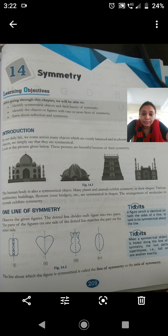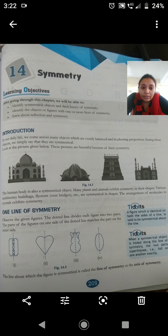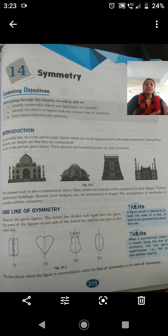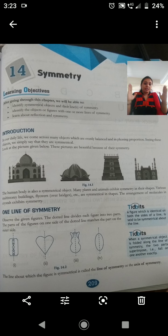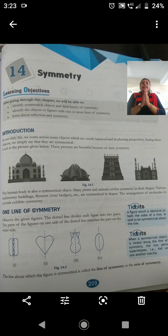See the introduction over here. In our daily life, we come across many objects which are evenly balanced and in pleasing proportion. We say that these objects are symmetrical. Look at the picture given below - these pictures are beautiful because of their symmetry. See the first picture, it's of the Taj Mahal. Cut the Taj Mahal into two equal parts - those two equal parts, if you superimpose them, you get equal parts. That is what symmetry is called.